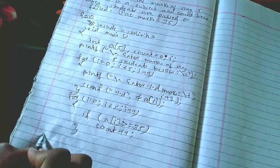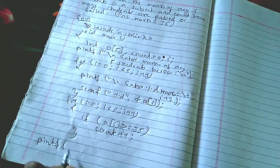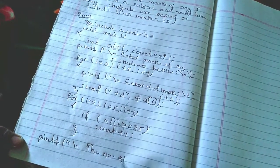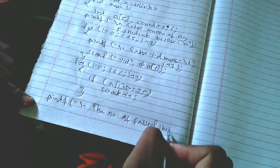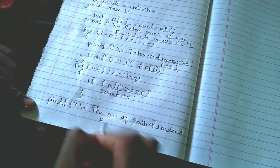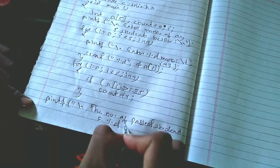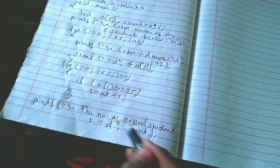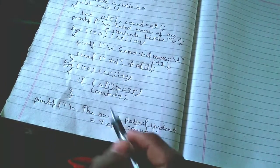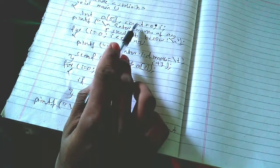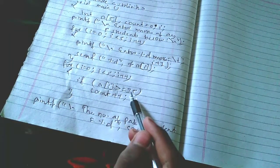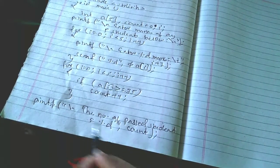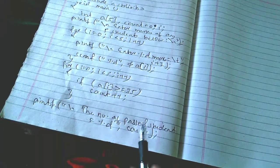Now we will close it. We have counted the number of students who passed. Now we have to print the result. We have printf with slash-n: 'The number of passed students equals to %d', comma, count. We are printing the number of passed students from the variable count, because we added one to count whenever we found marks greater than or equal to 35.